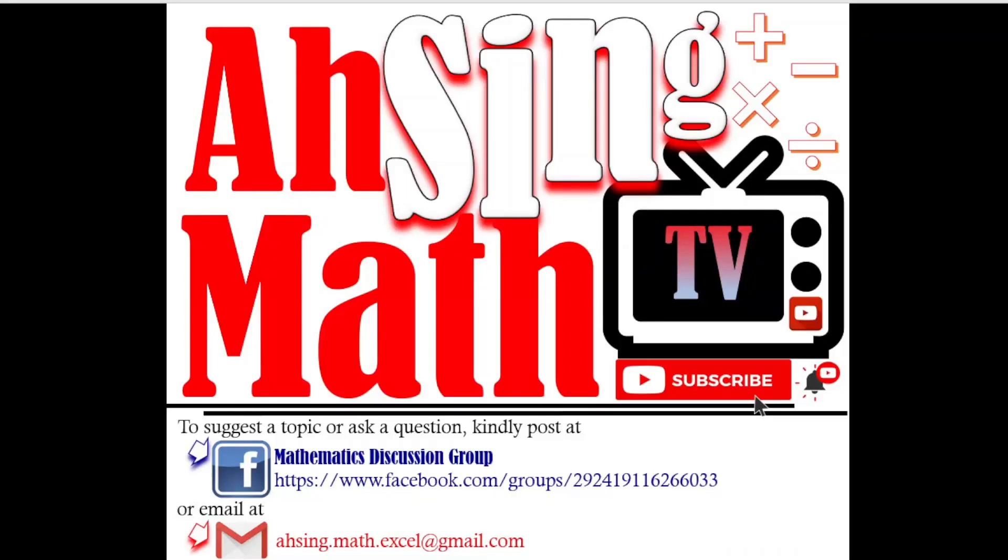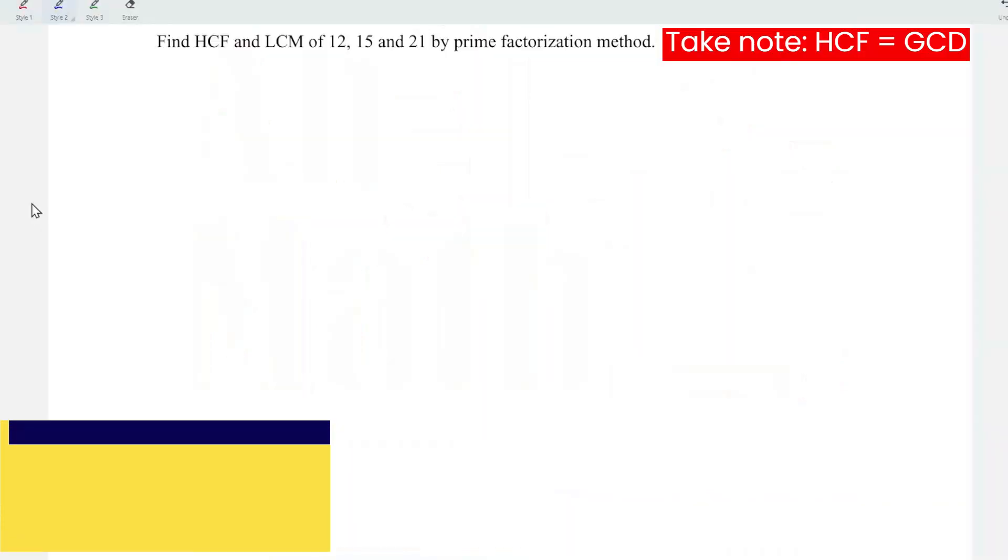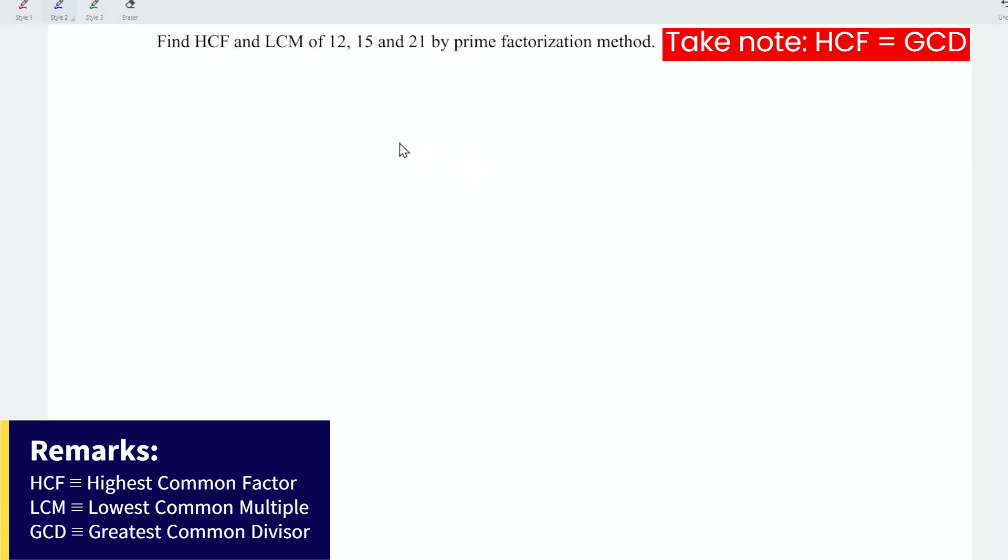Hi, this is Async. You are now watching AsyncMath TV. Today, I would like to share how to determine the highest common factor and the lowest common multiple of three numbers by using the prime factorization method.